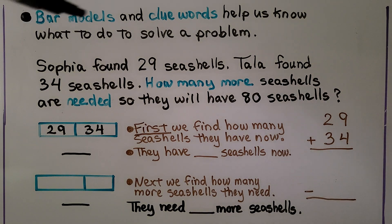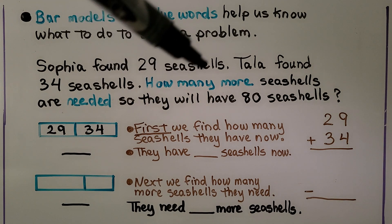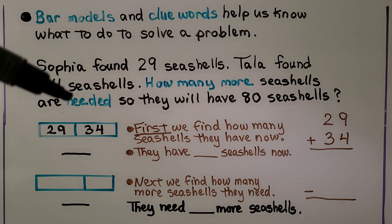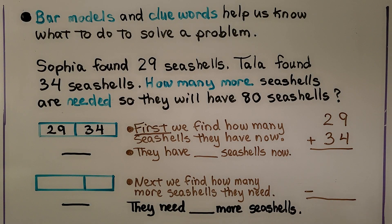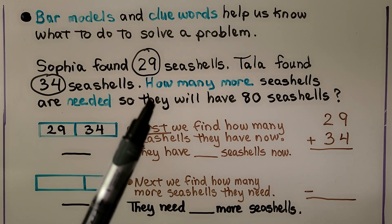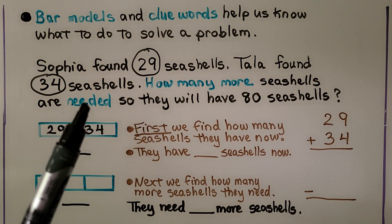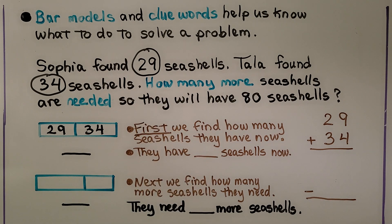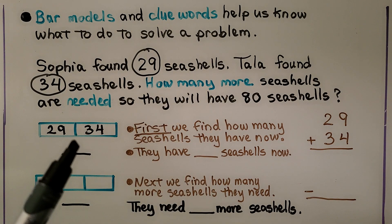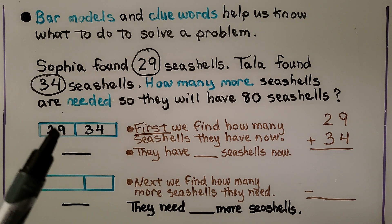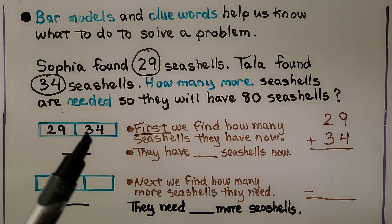Sophia found 29 seashells. Tala found 34 seashells. How many more seashells are needed so they will have 80 seashells? We think 29 and 34 are important numbers. It's asking how many more seashells are needed so they will have 80 seashells, so first we need to find how many seashells they have now — we need to add 29 and 34.